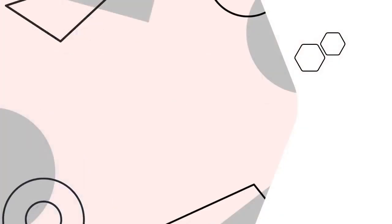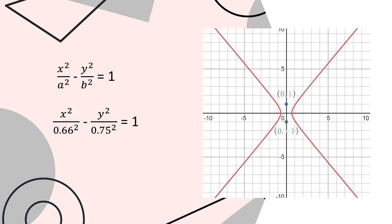Using all the values we have solved, we can now find the equation of the hyperbola containing P just by substituting the value of A and B to the standard equation. Therefore, x squared over 0.66 squared minus y squared over 0.75 squared equals 1 as the equation of the hyperbola containing P. The graph of our hyperbola will somehow look like this.